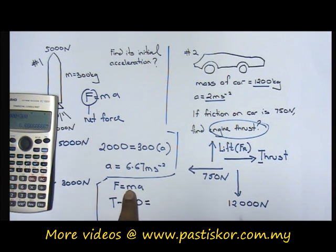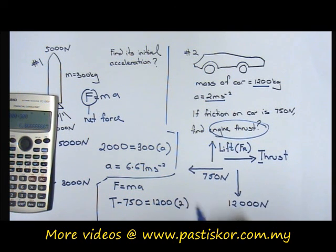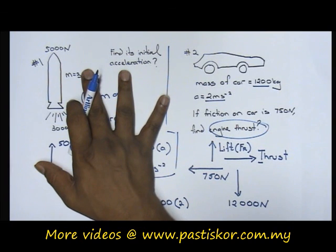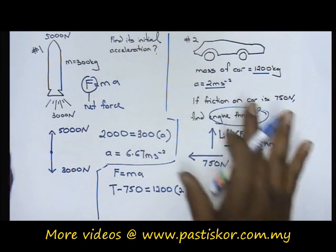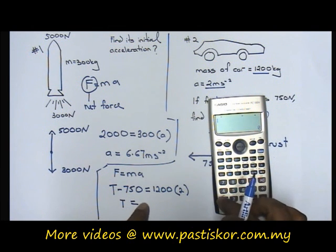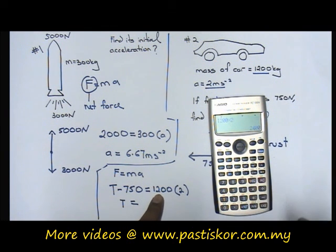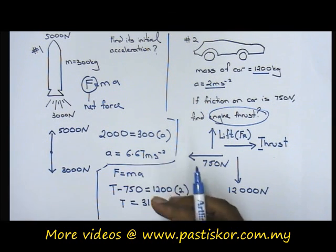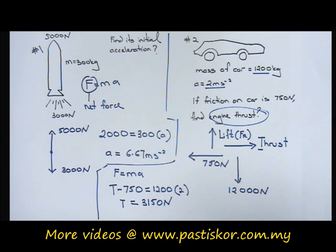To find thrust T: T minus 750 equals 1200 times 2. So T equals 2400 plus 750, which gives 3150 newtons. These two simple examples demonstrate the concept of balanced and unbalanced forces. Thank you.